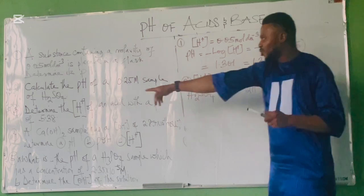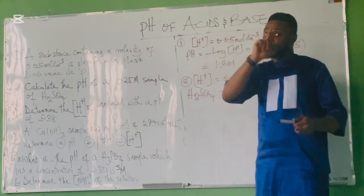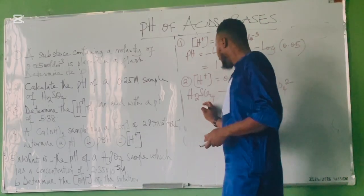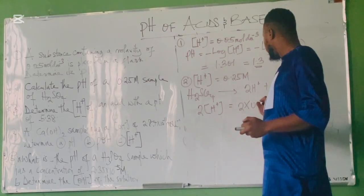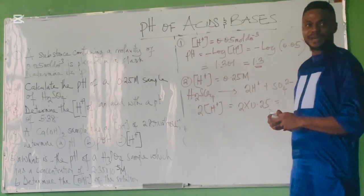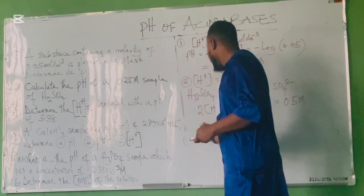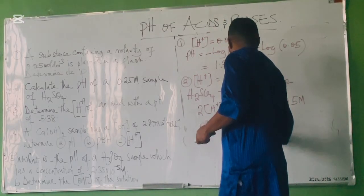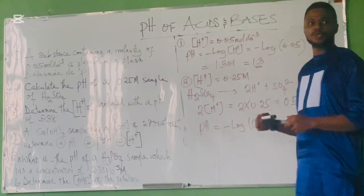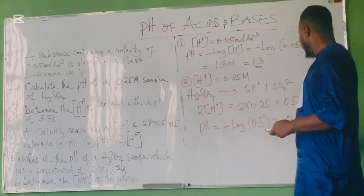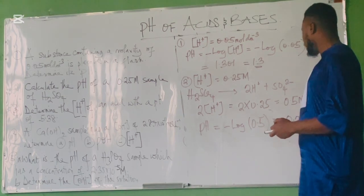Check the substance given and multiply the number of hydrogen ions by the given concentration. Since H⁺ has a coefficient of 2, we get: [H⁺] = 2 × 0.25 = 0.5 mol/L. Now pH = −log(0.5), which gives us 0.30. So pH = 0.30. Note that pH has no units.